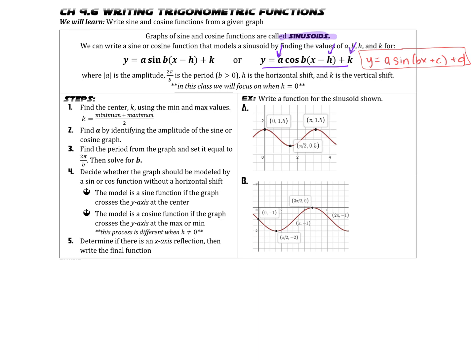Key things to point out: the absolute value of A is our amplitude; the period is 2π divided by B; and the center is Y equals K, or Y equals D. We're going to specifically focus in this class on what happens when H is equal to 0. So really, we're going to be looking at Y equals A times sine of BX plus D, and we're looking to identify A, B, and D in order to write the function.